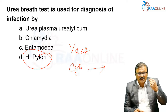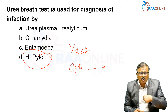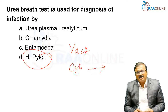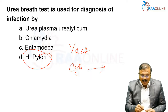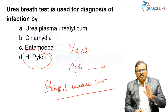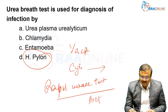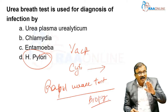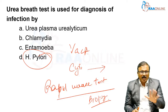The classically used invasive test is endoscopy — take a biopsy of tissue and do a rapid urease test, which is almost as good as a biopsy. The gold standard for diagnosis of H. pylori infection is biopsy.